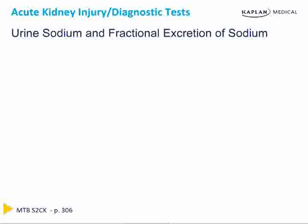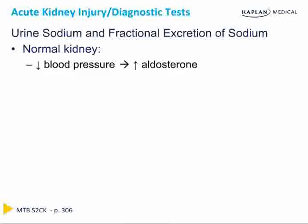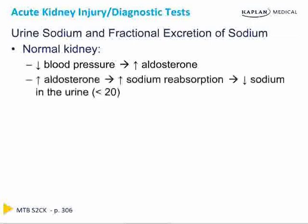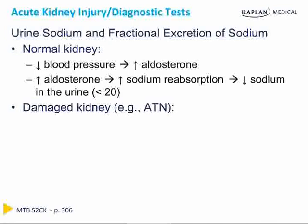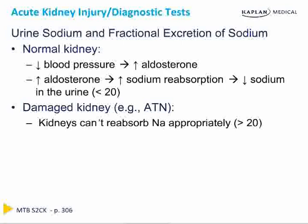Urine electrolytes are particularly helpful in determining prerenal AKI. When blood pressure drops, normal kidneys respond with increased aldosterone from the adrenals, leading to increased sodium reabsorption in the distal nephron. In prerenal AKI, there's appropriately low sodium in the urine — less than 20 mEq/L. In the case of a damaged kidney, such as ATN, the kidneys cannot reabsorb sodium appropriately, so urine sodium is inappropriately high — greater than 20 mEq/L.